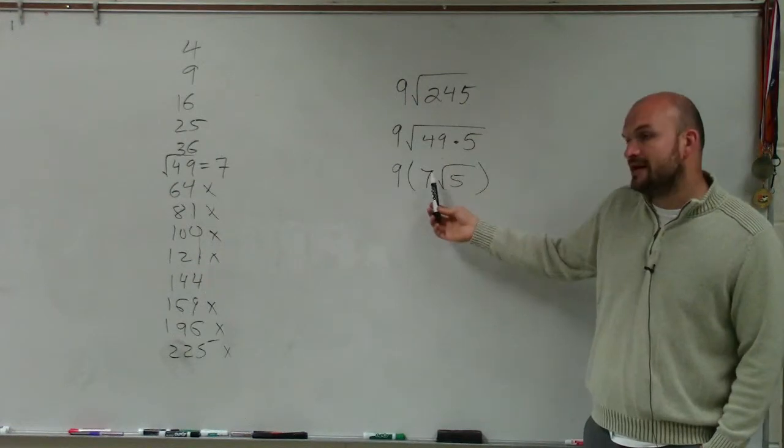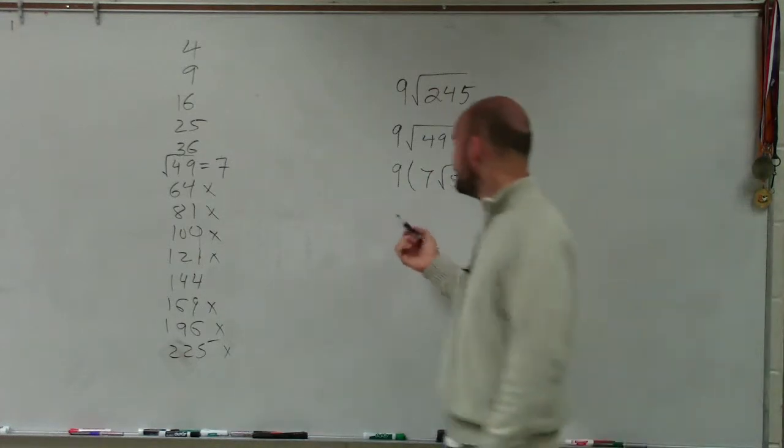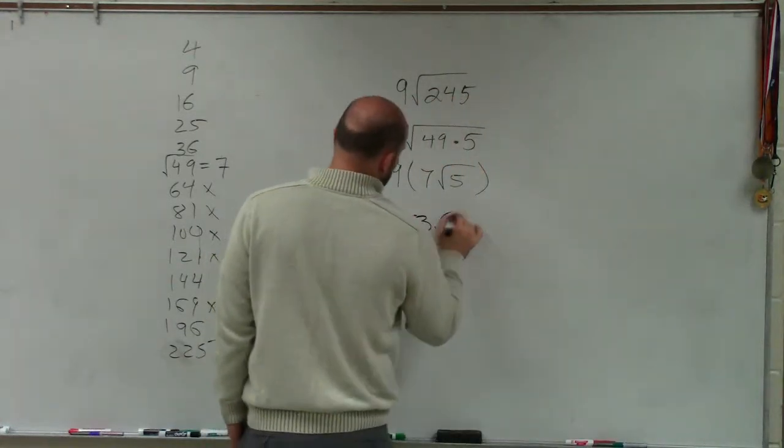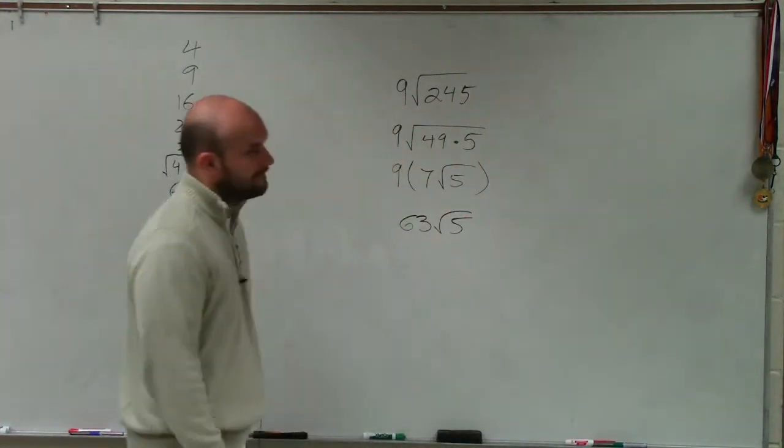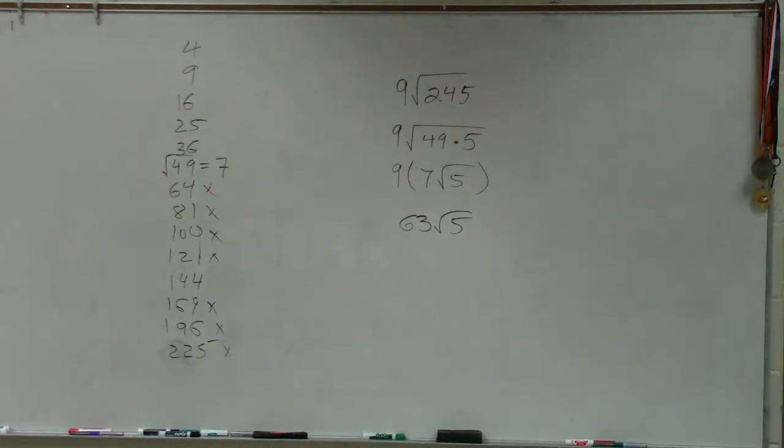You cannot multiply a number outside to the inside. But you can multiply these two. So your final answer is 63 times the square root of 5.